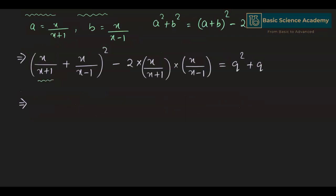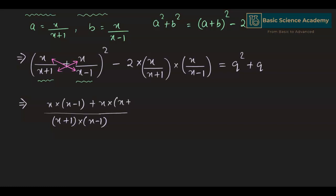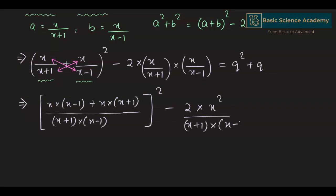The common factor in the denominator is (x+1) multiplied by (x-1). So we cross-multiply: x by (x-1) plus x by (x+1), all over (x+1)(x-1), whole squared, minus 2 multiplied by x squared divided by (x+1)(x-1). This equals q squared plus q.